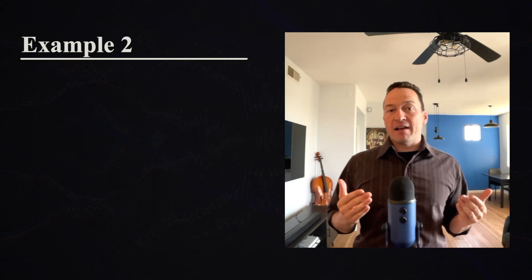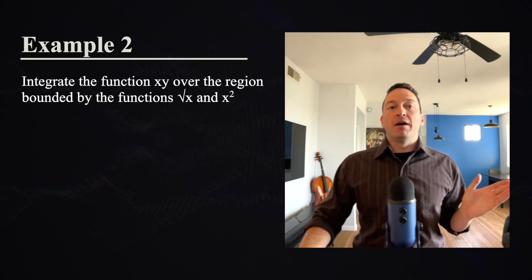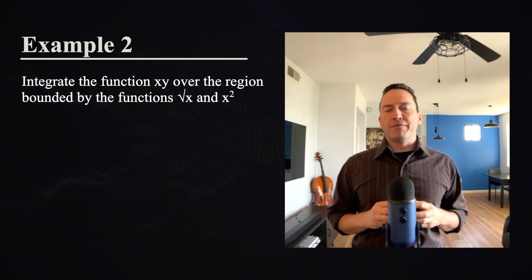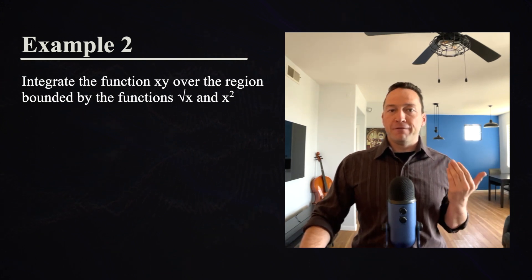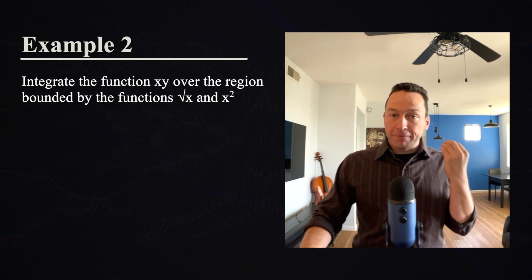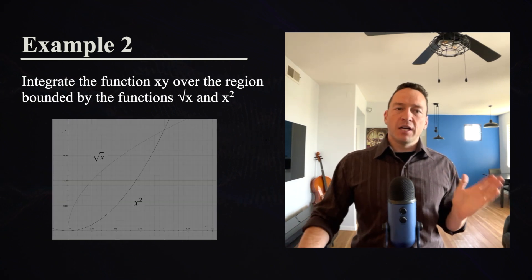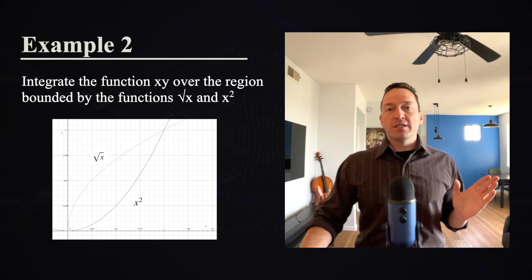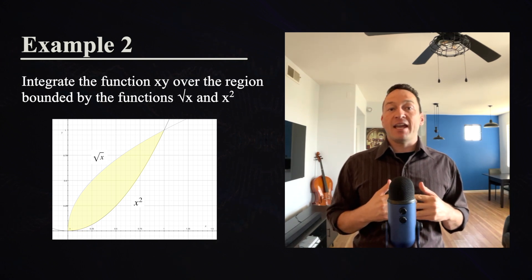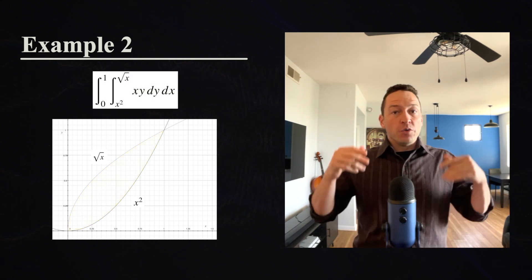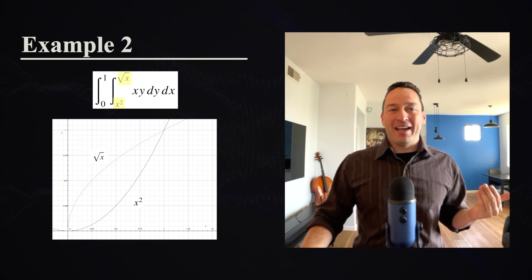Let's understand this with a different example. You might be given a problem like this: integrate the function x times y over the region bounded by the functions square root of x and x squared. First, try to understand what this could mean physically. What do they mean by the region bounded by square root of x and x squared? Graph both functions and spot the region between them. A professor might say: simply set up an integral integrating from x squared to the square root of x as the bounds — but you don't actually understand what that means, right? You may have a vague image of moving from one curve to the other, but no actual evidence that it works out mathematically.